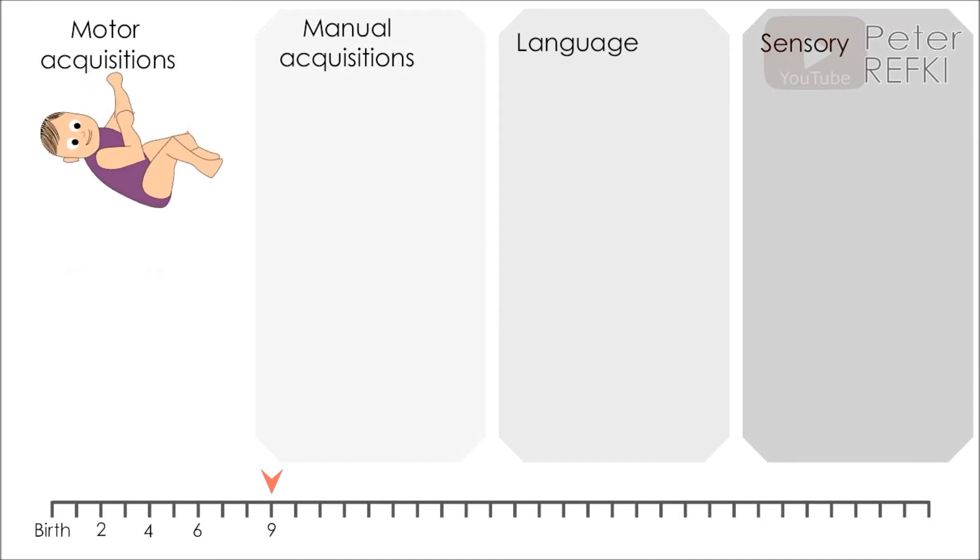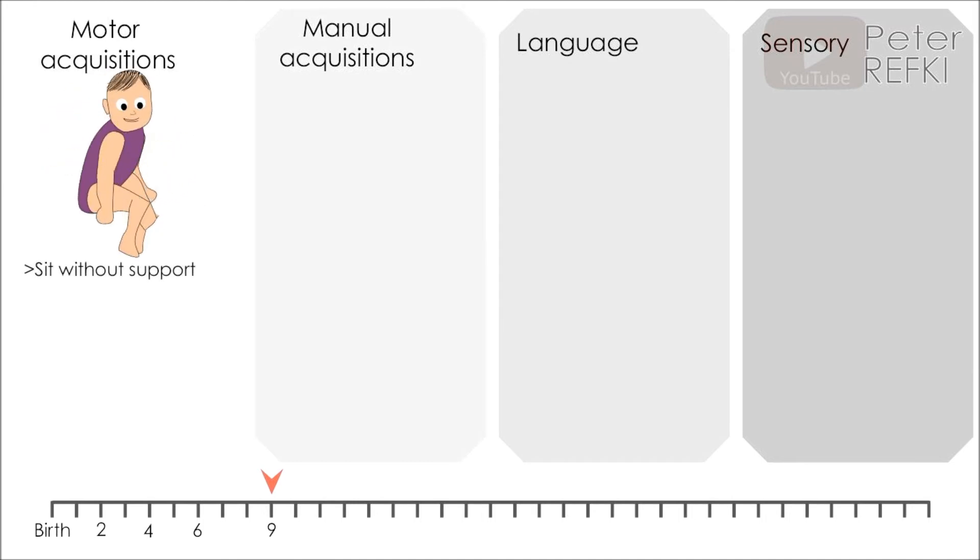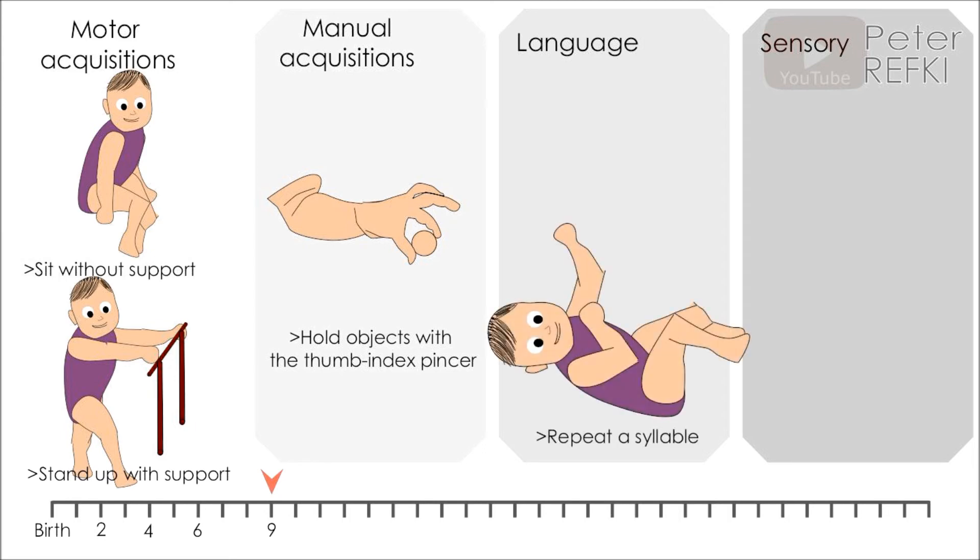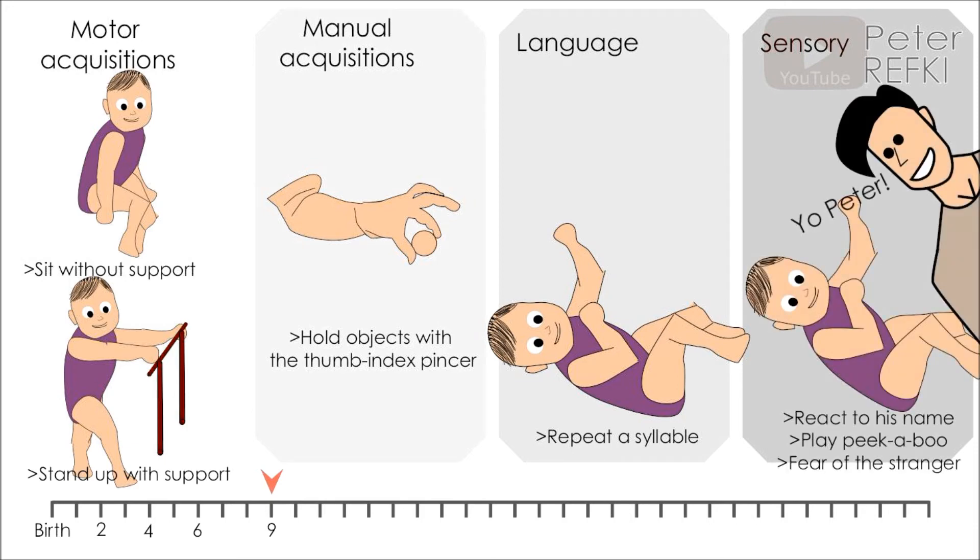At nine months of age, the baby can sit without support and can start standing up with help or support. He can hold objects with the thumb-index pincer and have postural reactions. He can repeat a syllable, react to his name, play peekaboo, and develop fear of strangers.